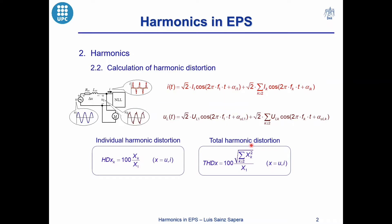The total harmonic distortion is a global ratio about the waveform pollution, and it is determined as the ratio between the square root of the sum of the squares of all the harmonics and the root mean square value of the fundamental waveform. These two ratios can be applied to characterize the distortion of both currents and voltages.